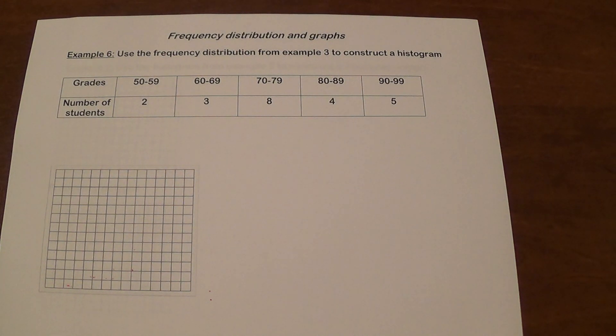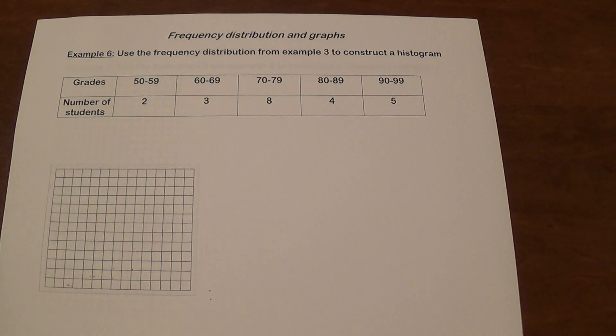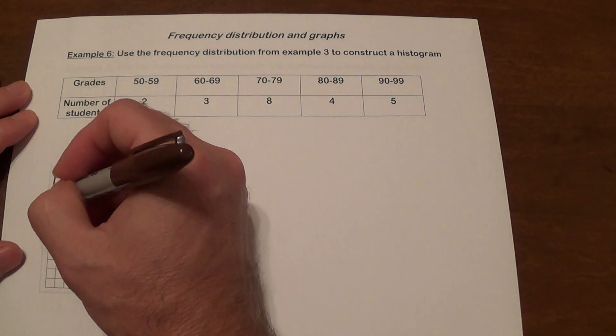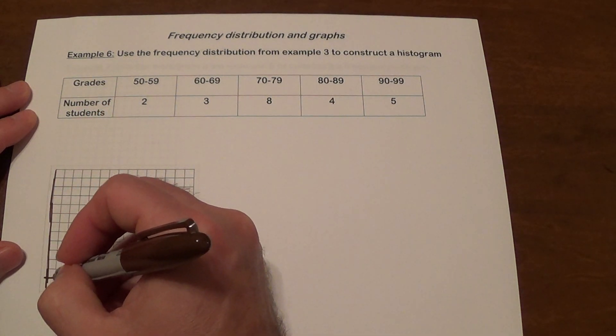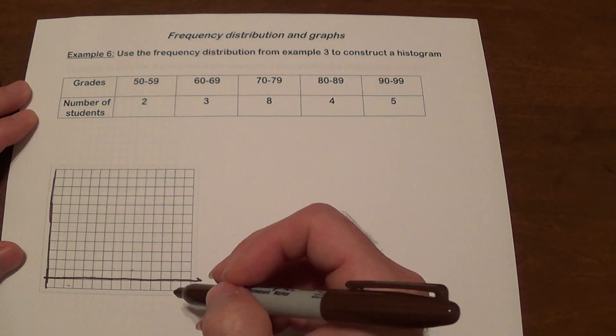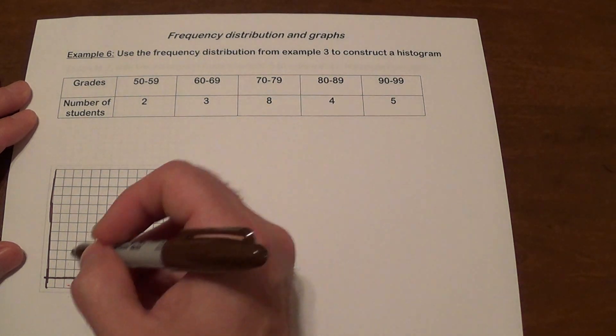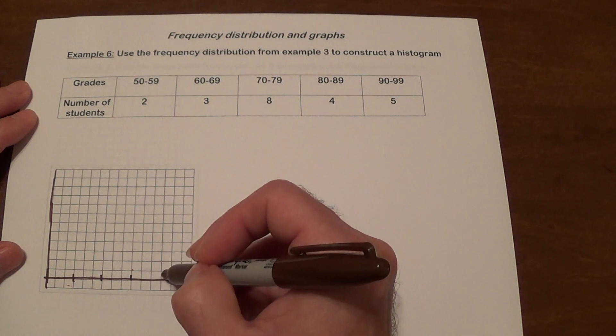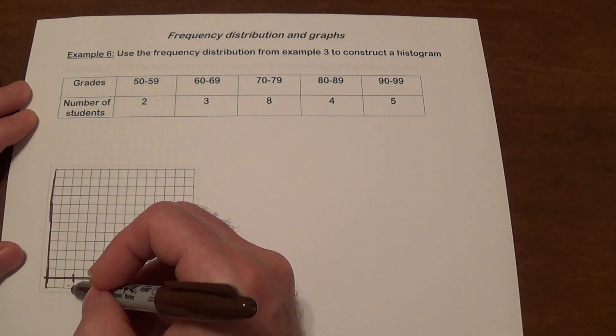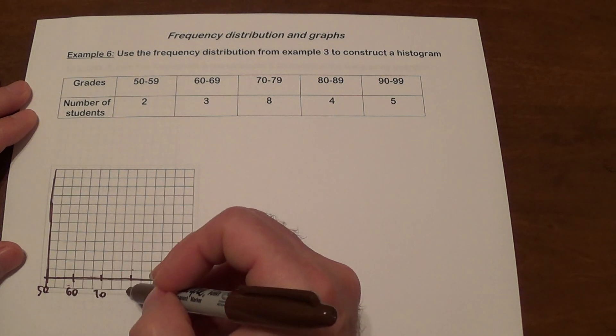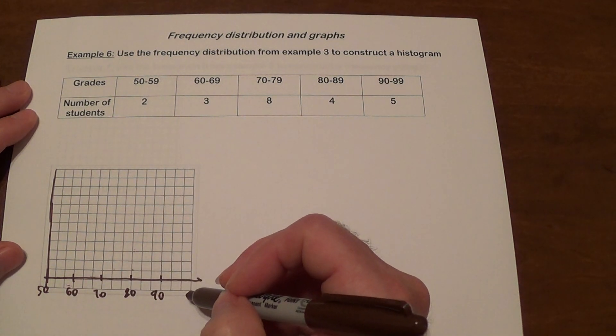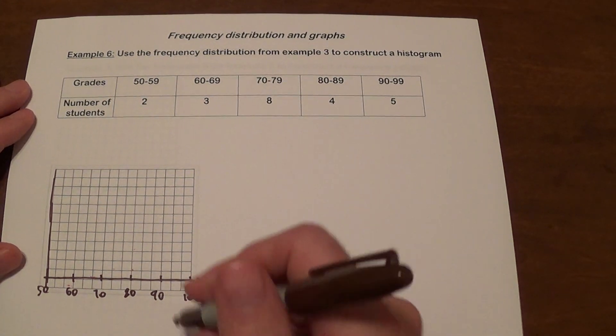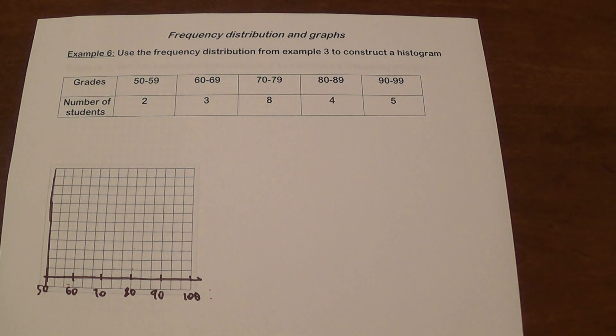We can do it with the grouped frequency distributions and do the same thing. So let's go ahead and do that. So here we're going to go with, let me see, I've got 1, 2, 3, 4, 5. So we're going to go like this. So this is going to be 50. This is going to be 60 and 70 and 80 and 90 and 100. I know we technically don't have 100, but we can still use that as our value to make our graph look very nice.